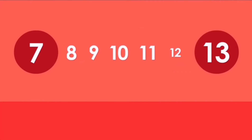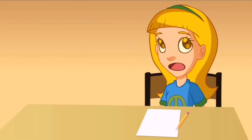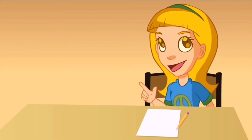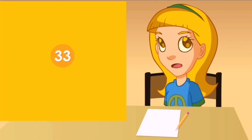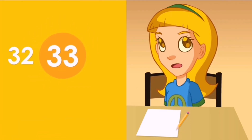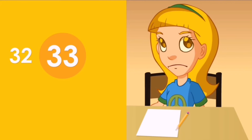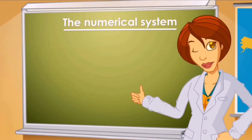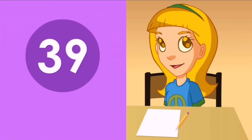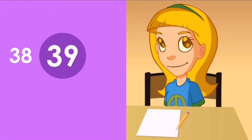Eight, nine, ten, eleven, twelve, and we get to thirteen! And the next number is thirty-three. The number before is thirty-two, and the number after is thirty-four. And after that, here comes thirty-nine on my list. The number before is thirty-eight, and the number after is forty.